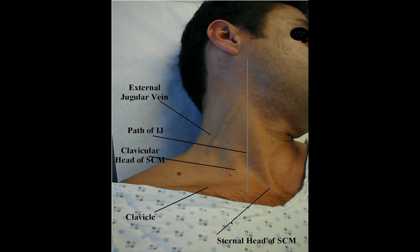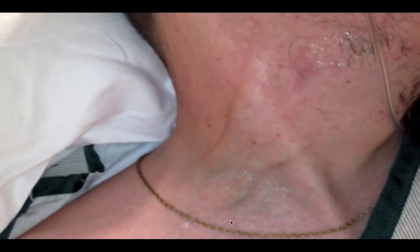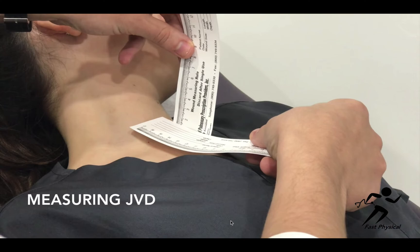This picture shows the external jugular vein and the two heads of the sternocleidomastoid. In order to measure the jugular venous pressure, we have to expose the area properly to see the neck. We start in a supine position, then we may increase to 30 degrees and move up or down until we can see the top of the column.